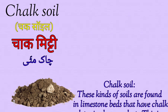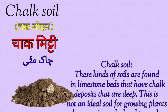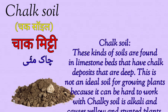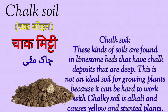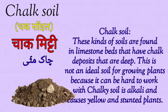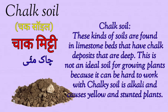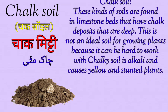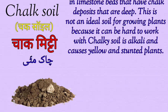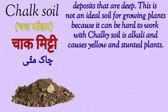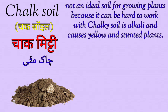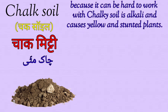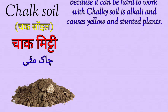Chalk soil — in India and Urdu it is called 'chok miti'. This kind of soil is found in limestone beds that have chalk deposits that are deep. It is not an ideal soil for growing plants because it can be hard to work with. Chalk soil is alkaline and causes yellow and stunted plants.